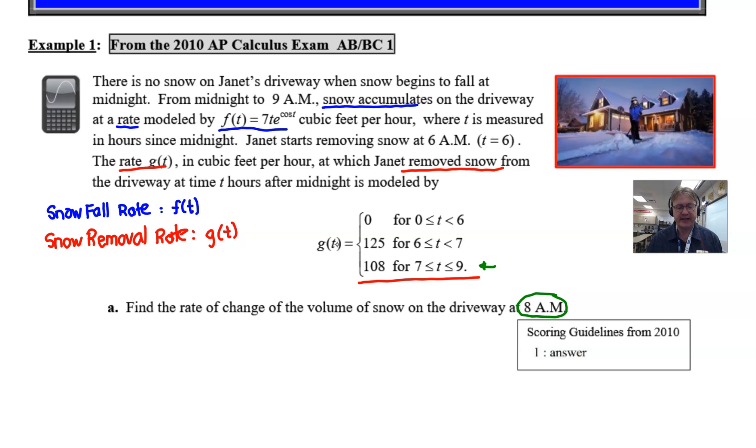Now, in order to come up with the rate of change of the volume of the snow, all we need to do is figure out what is the rate of change at which the snow is falling at time 8 and subtract the rate at which Janet is shoveling at time 8, which we actually know. We know that g(8) is going to be 108. We know that that is certainly a constant value all the time throughout those two hours. What we don't know necessarily right now off the top of our heads is what f(8) is, and that's where the calculator is going to come into play. So let's plug that in and see what we get.